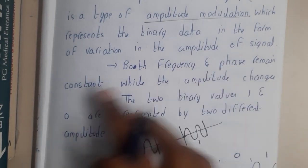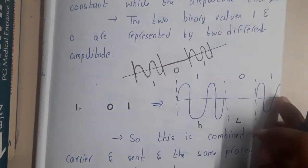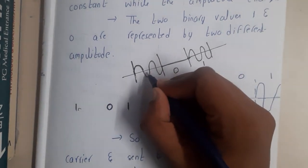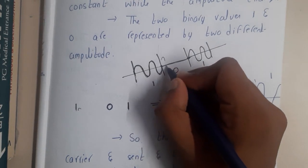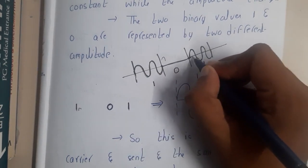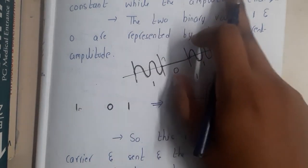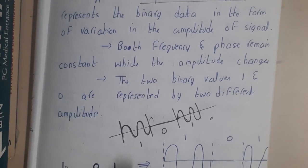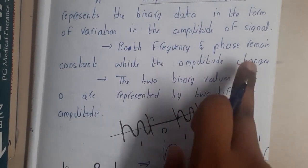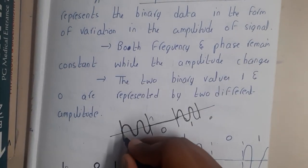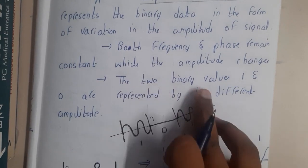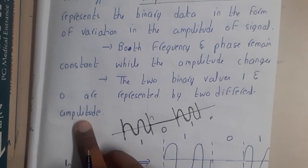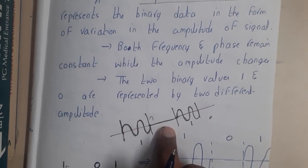Here both the frequency and phase remain constant. The frequency and phase shift are kept constant — the signal is not reversed or anything. We'll be discussing frequency change and phase change later. Both frequency and phase are kept constant while the amplitude is changed. The two binary values, one and zero, are represented by two different amplitudes — high amplitude is one and low amplitude is zero.